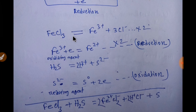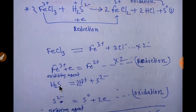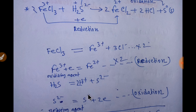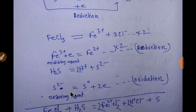Again, hydrogen sulfide — we can write hydrogen sulfide as two protons plus sulfide ion. This sulfide ion will release electrons and will go to zero oxidation state as sulfur. Since in this reaction an electron is lost, this is an oxidation process, and this sulfide ion is a reducing agent, as reducing agents always lose electrons.